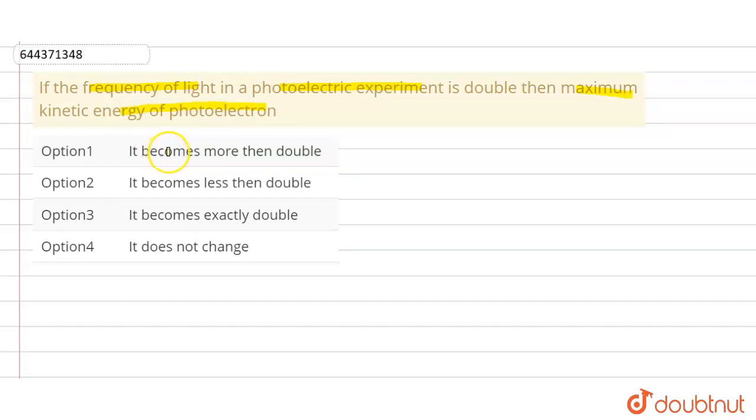So first we will know what is photoelectric effect. Photoelectric effect is that effect in which a light is incident on the metal, and after incident on metal, the electron is moving and a current is produced.